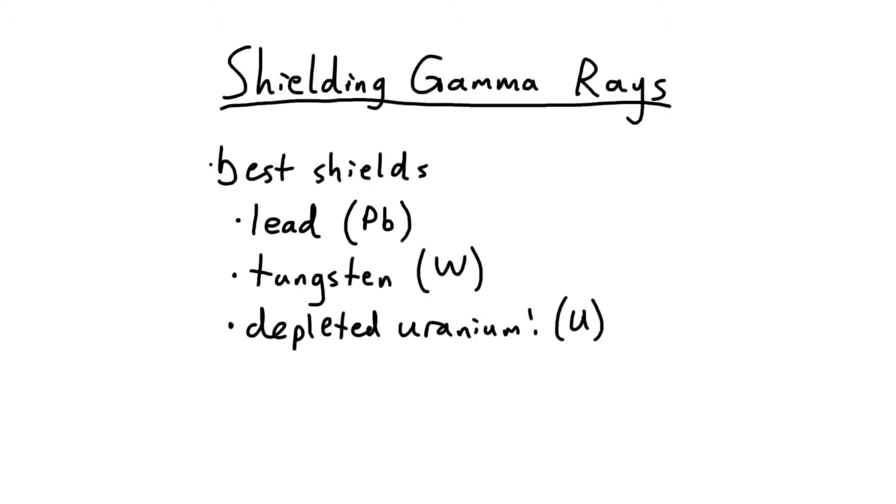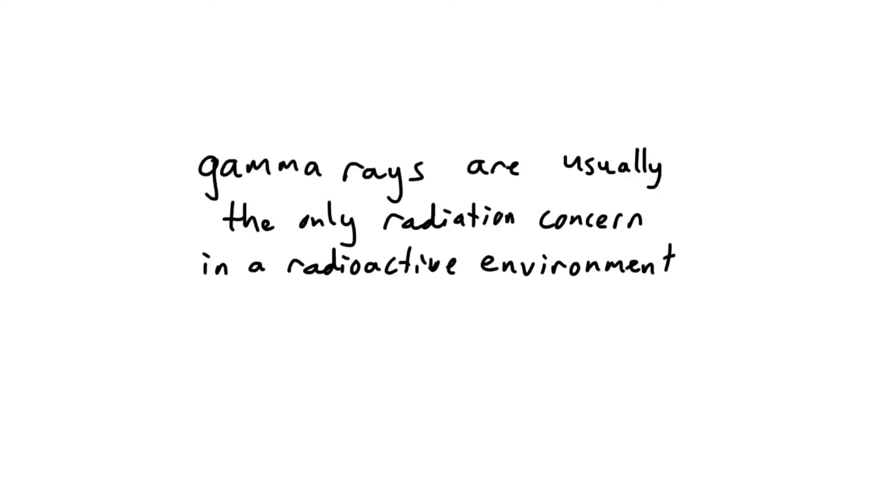However, the best shields for gamma rays are lead, tungsten, and depleted uranium. That's because of how dense these materials are. You can physically get many more atoms in the same volume as you would with steel or concrete. Gamma rays are usually the only type of radiation that you have to worry about in any given radioactive situation.